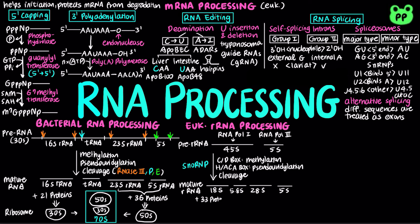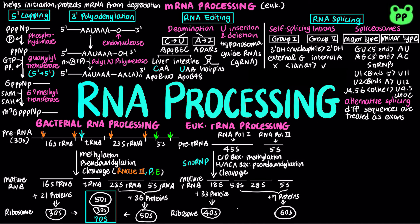The 18S mature RNA combines with 33 other proteins to form the 40S small subunit of the ribosome, whereas the 5.8S, 28S, and 5S mature RNA combine with 47 proteins to form the 60S large ribosomal subunit. During translation, the 40S small subunit combines with the 60S large subunit to form the 80S eukaryotic ribosome.